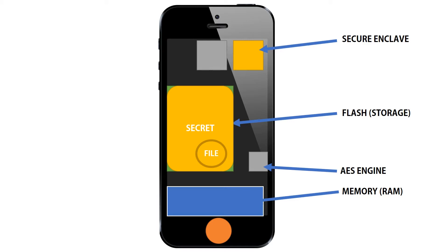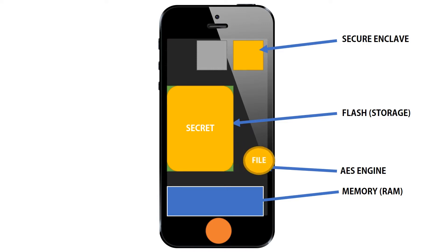When you open an image or a video, that encrypted file travels from the flash storage to the AES engine, and the AES engine decrypts the file, and then it goes to the memory where you can access it.